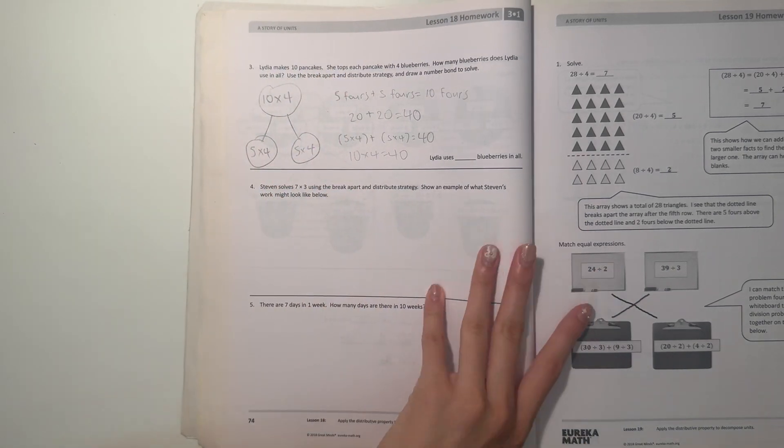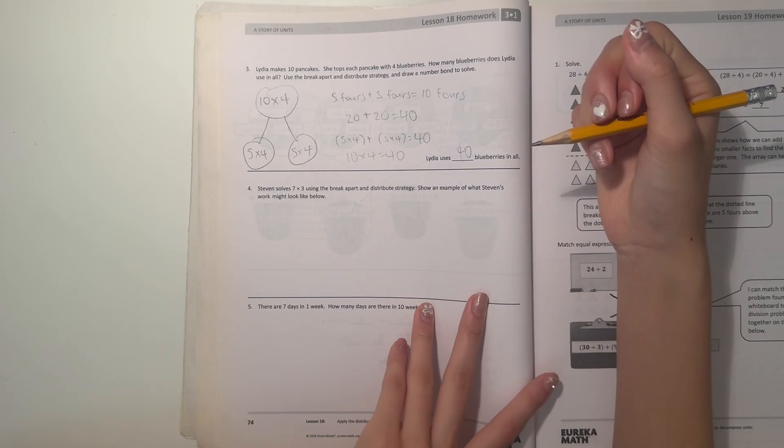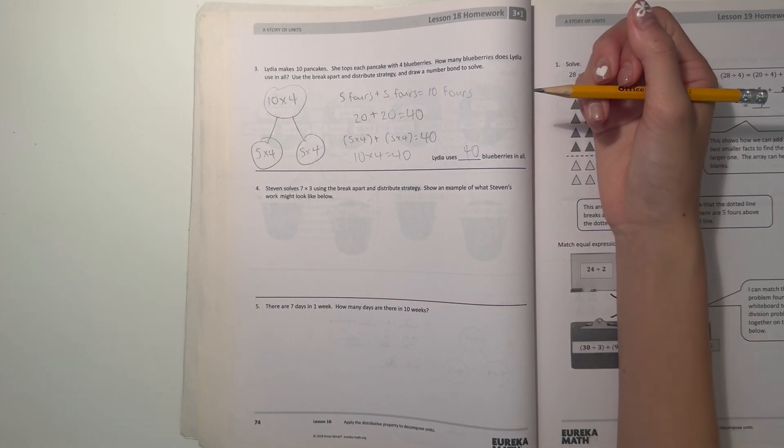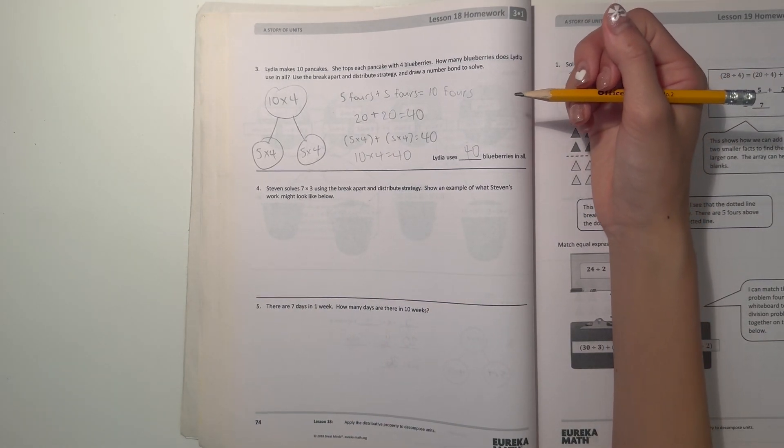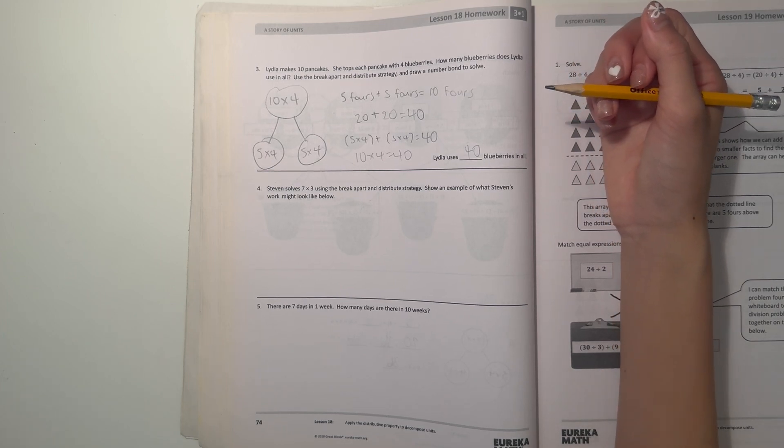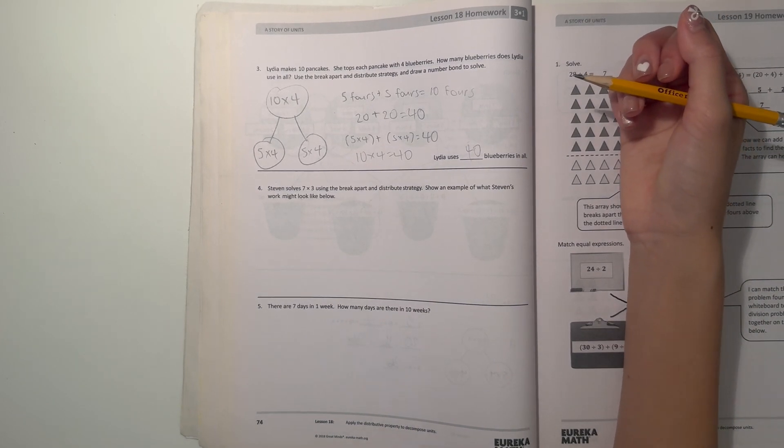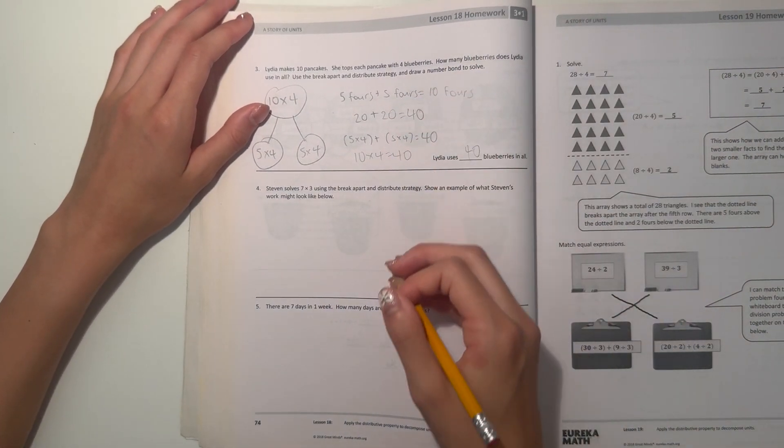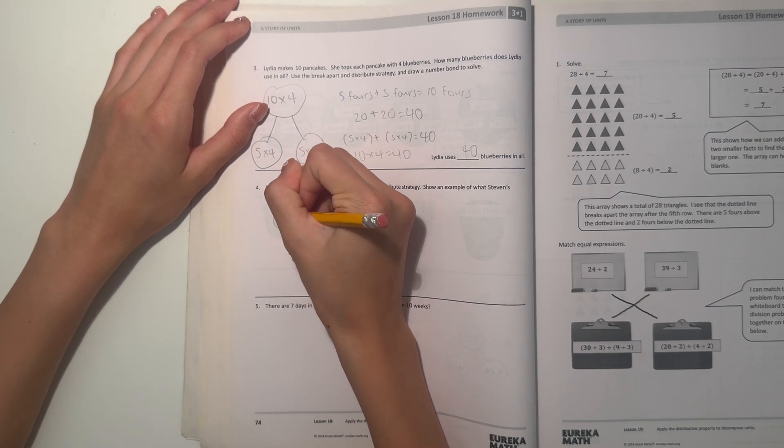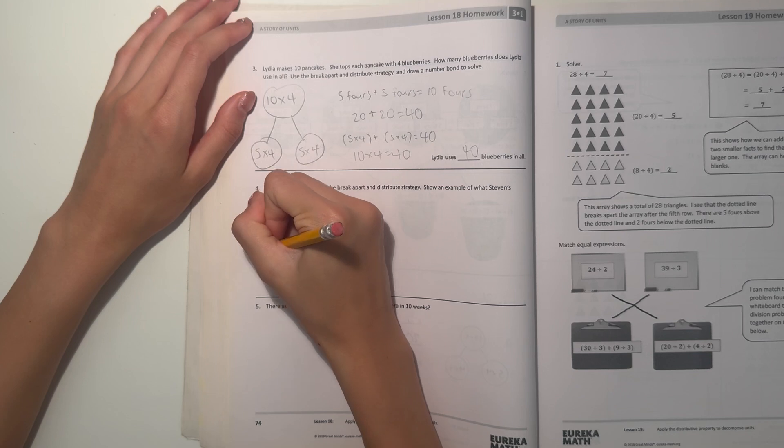Number four. Steven solves seven times three using the break apart and distribute strategy. Show an example of what Steven's work might look like below. All right, so let's see. Seven times three - so that's seven times three. You can break it apart into four times three and three times three. So let's see, we can do four times three